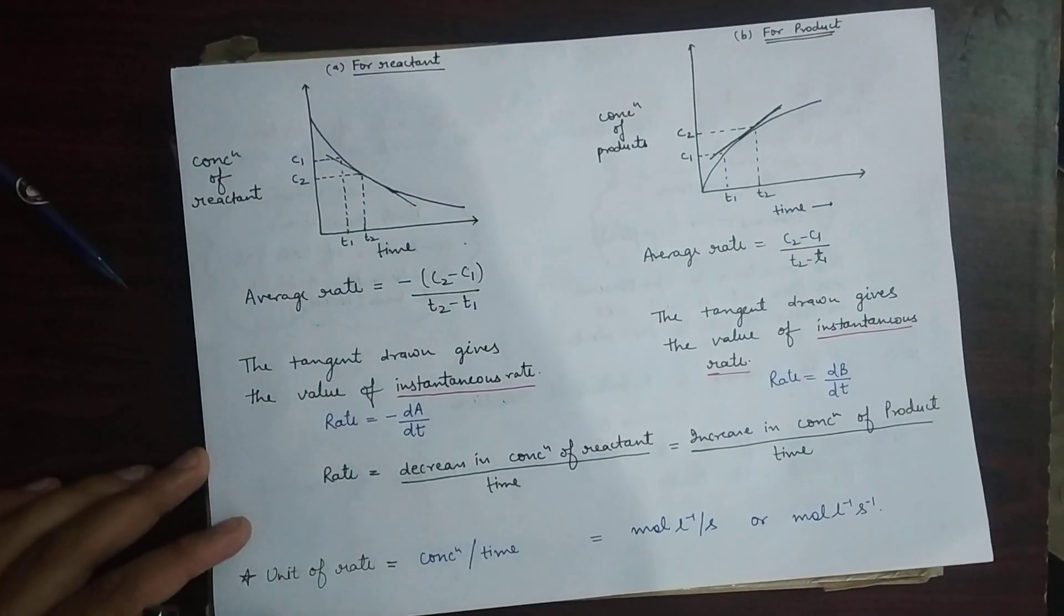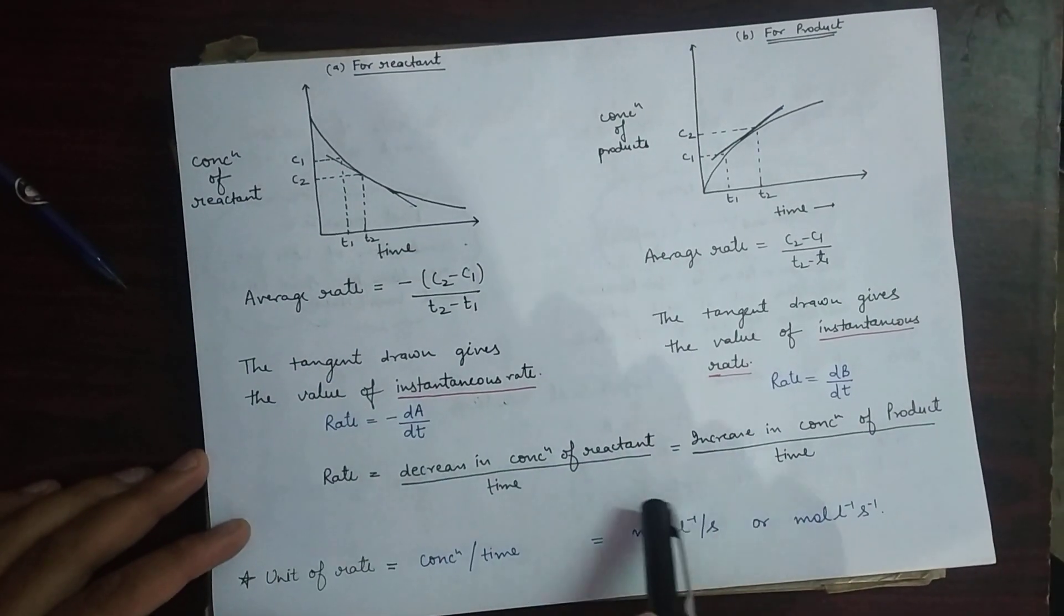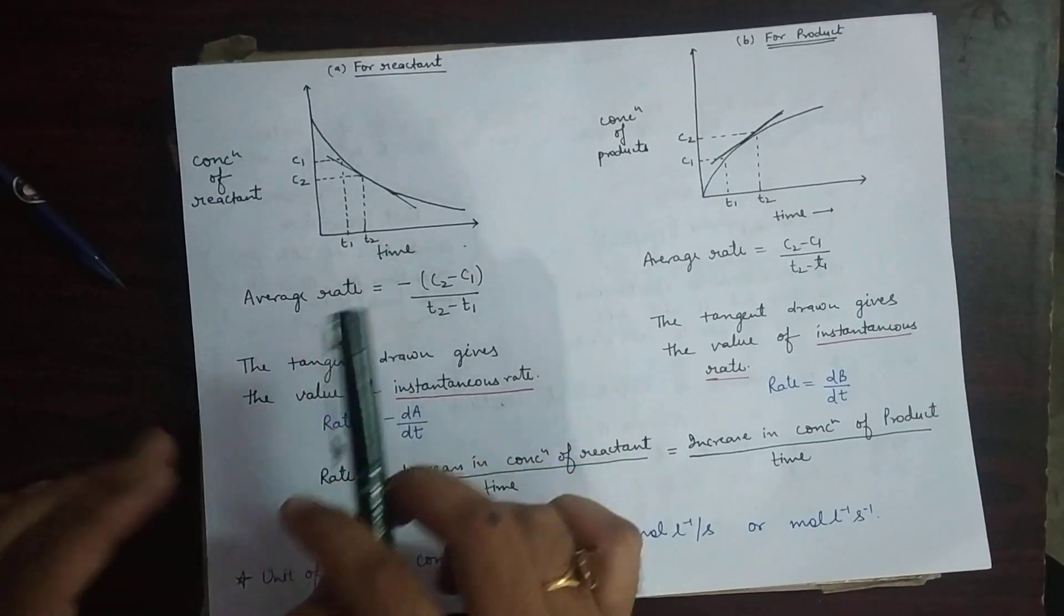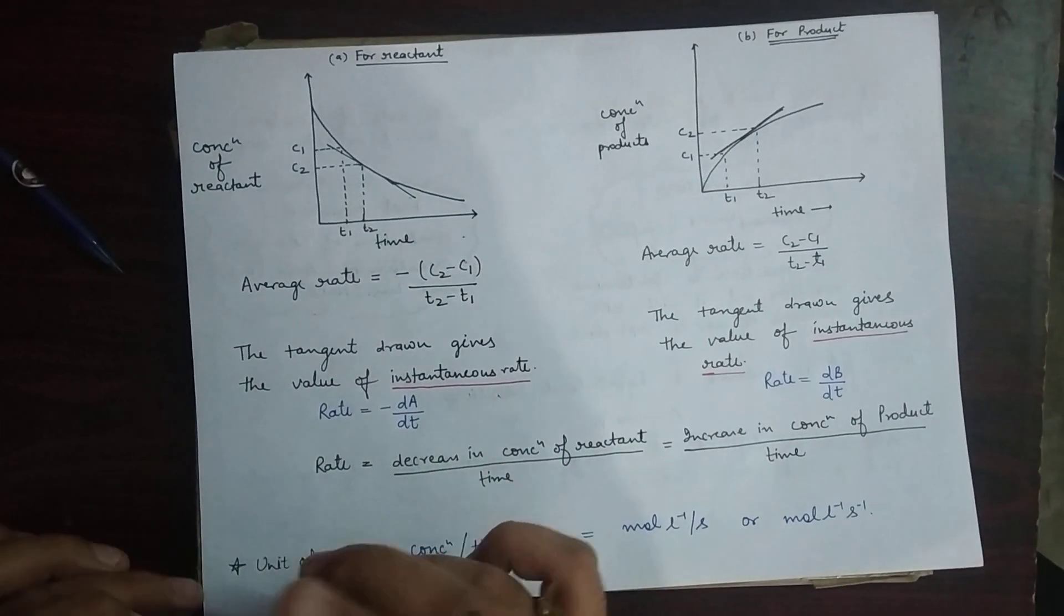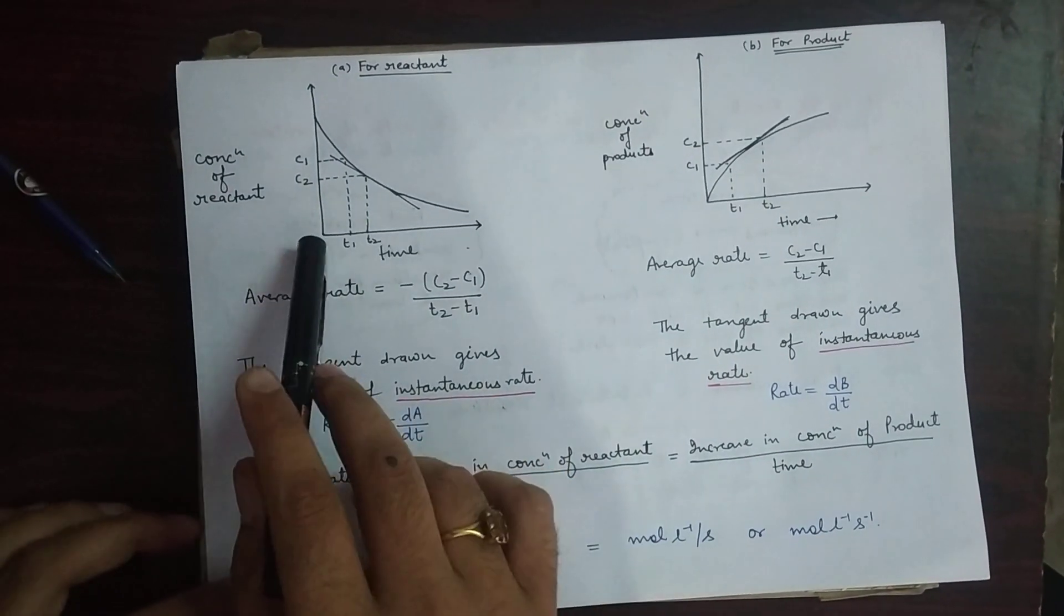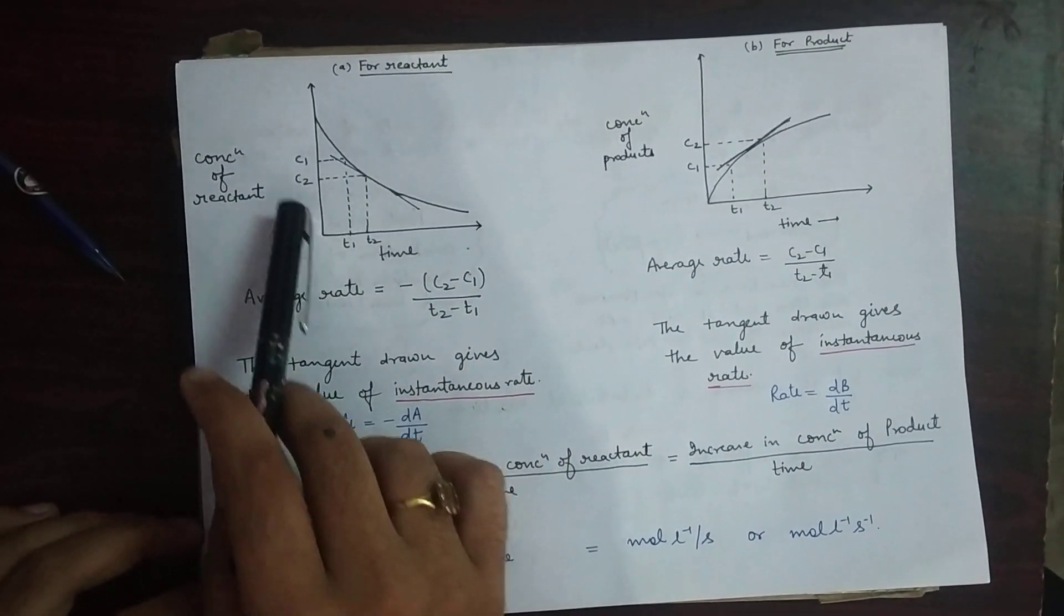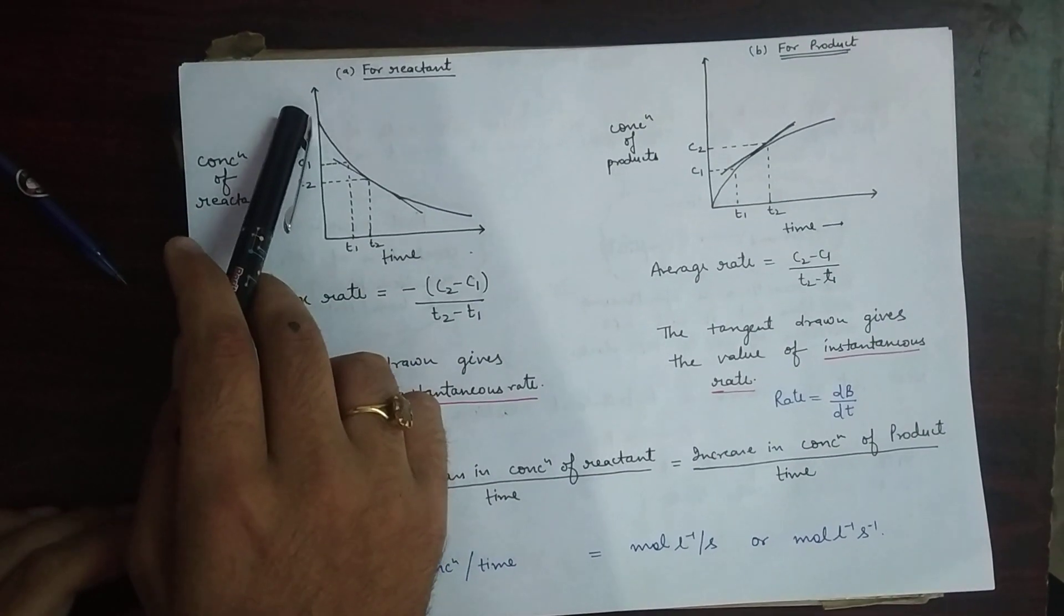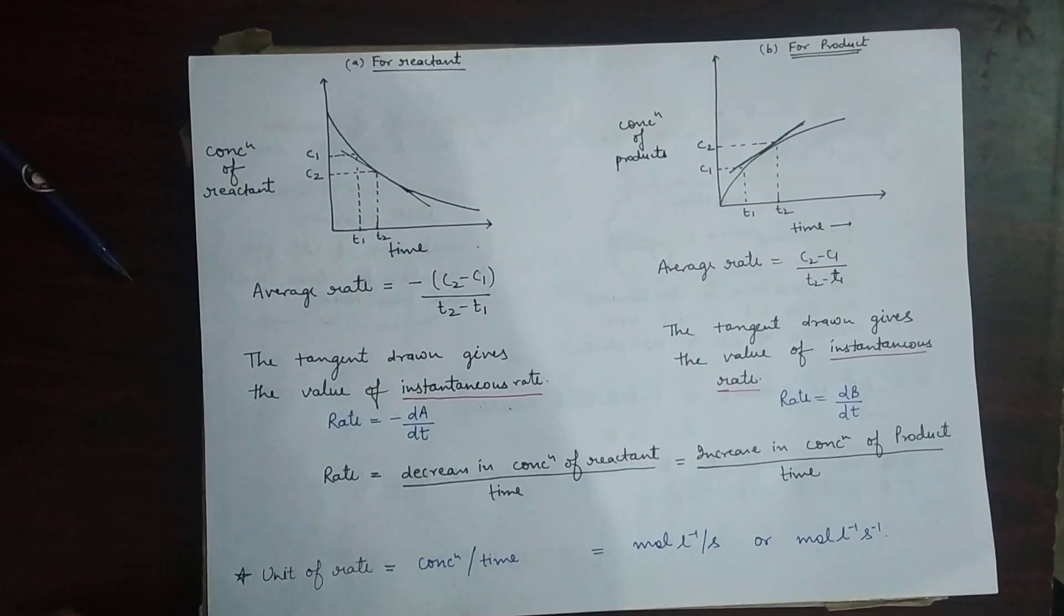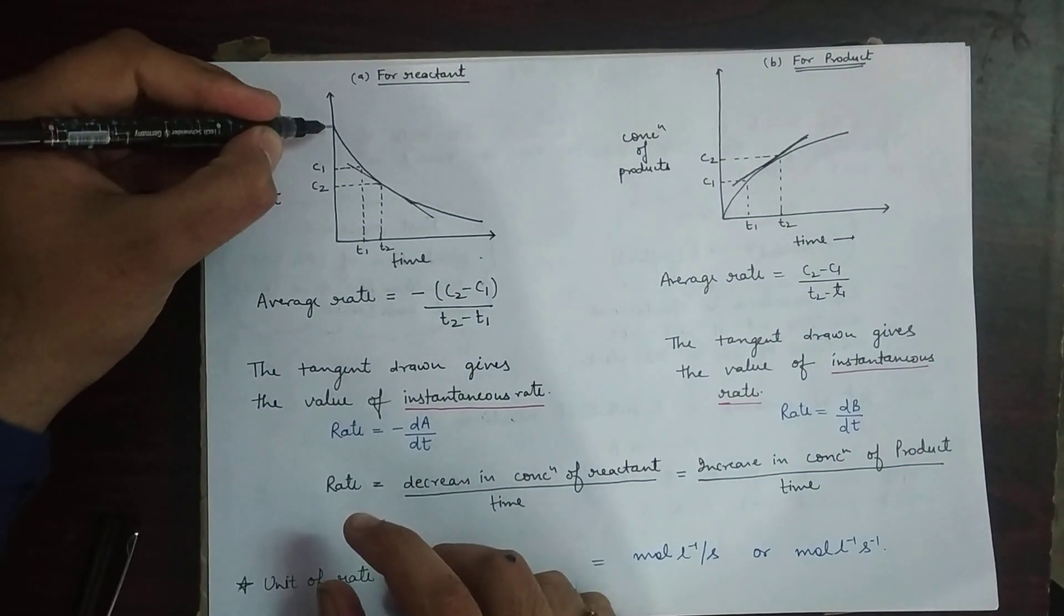I have plotted a graph between the concentration of reactant with respect to time. At the very start of a reaction, at time zero, the concentration of reactant is at its maximum value. As you can see, this point shows the maximum value of the reactant concentration.